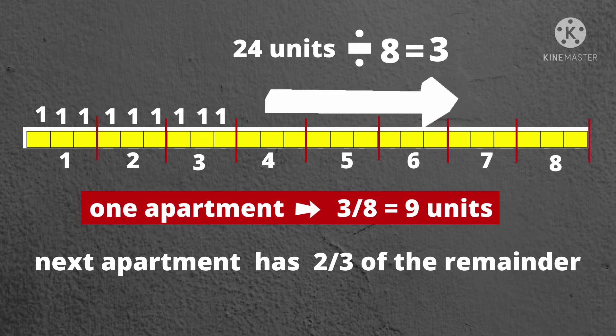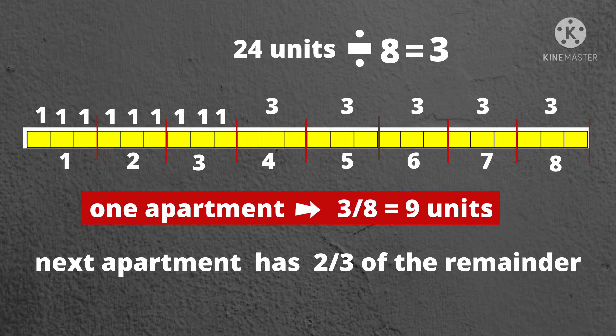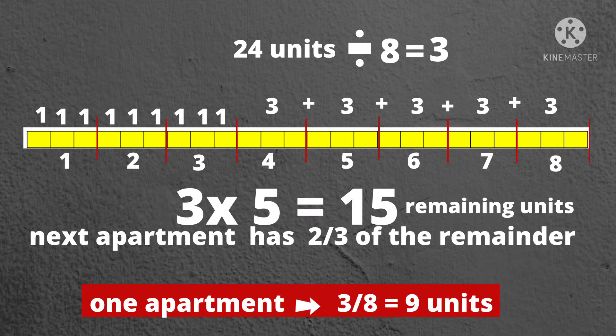Let's now proceed to the number of newspapers delivered to the next apartment which has two-thirds of the remainder. Let's make a shortcut by indicating 3 above, meaning there are 3 units per group.